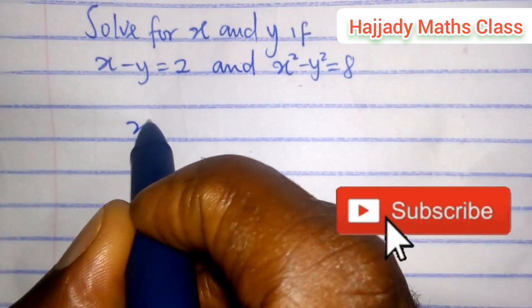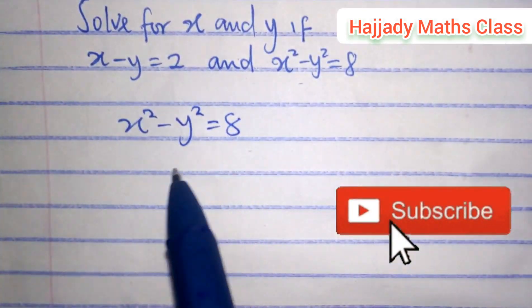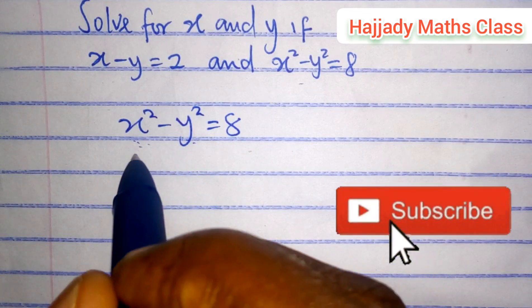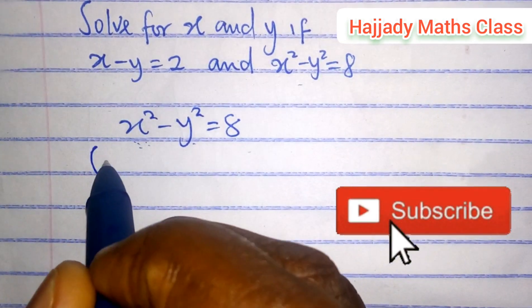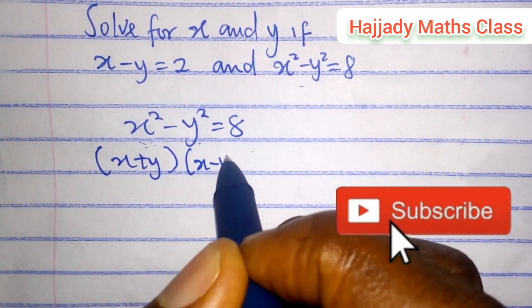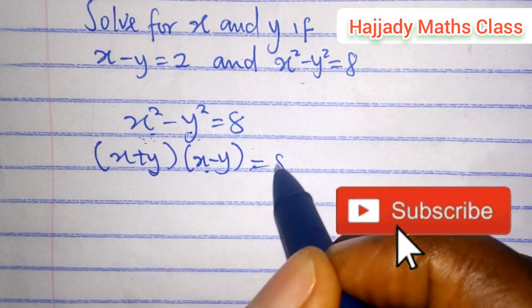Now, looking at this, solving this first, we have x squared minus y squared equals 8. Looking at this, this is called the difference of two squares. And in solving the difference of two squares, it means the addition of this and the subtraction of this. When you try to expand this, you get this back. This is equal to 8.